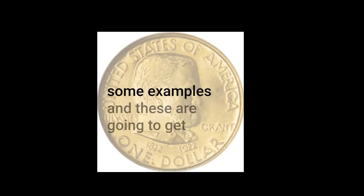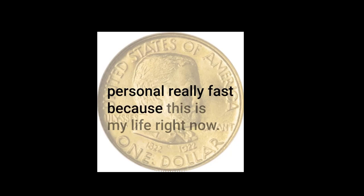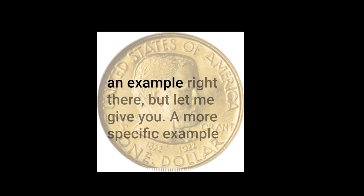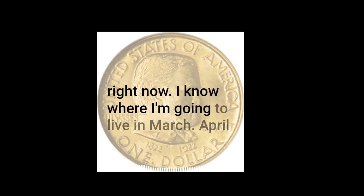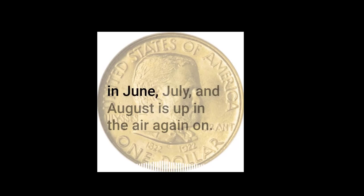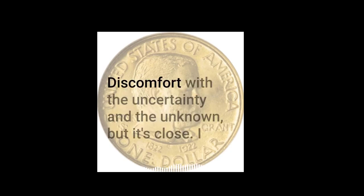Let me give you some examples, and these are going to get personal really fast because this is my life right now. My geographic existence is up in the air right now. Right now I know where I'm going to live in March, April, May, and most of June. But where I'm going to live in June, July, and August is up in the air. There's uncertainty, discomfort with the uncertainty, and the unknown — but it's close.